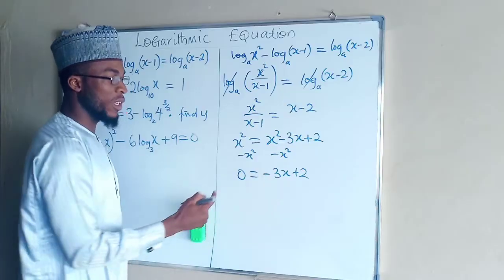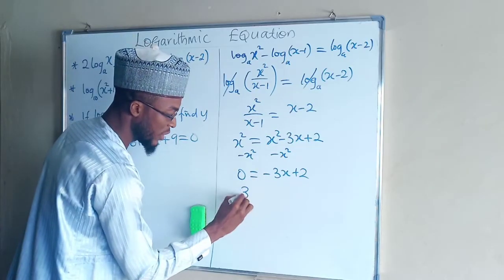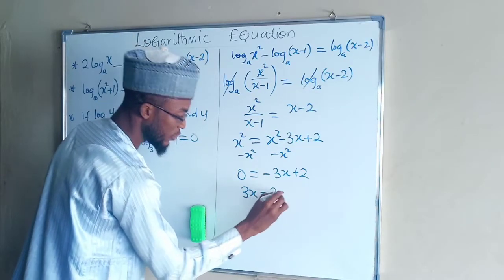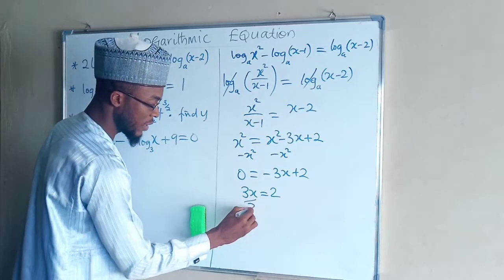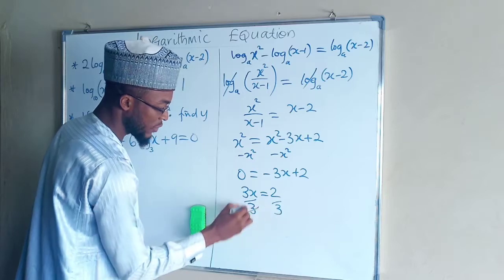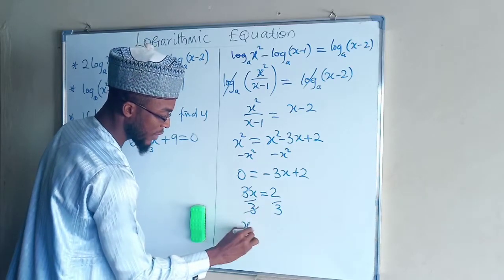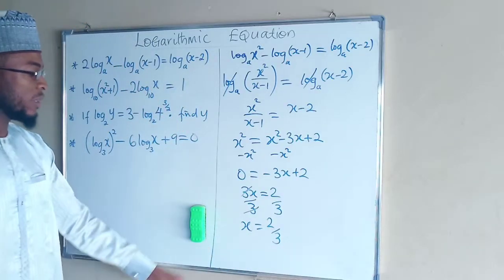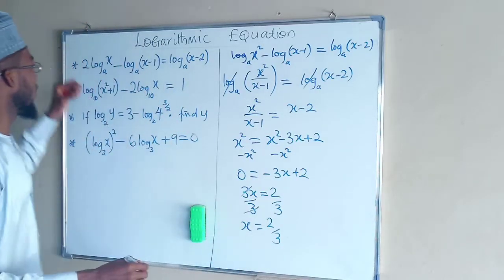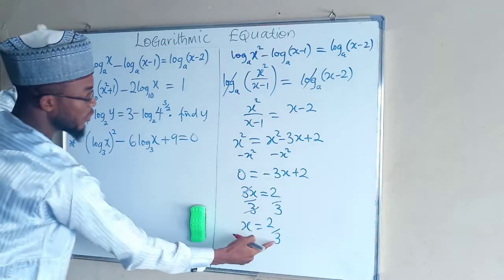By bringing this one to the left hand side we have 3x equals 2. Then to find the value of x you need to divide both sides by 3. So x now equals 2 over 3. Therefore the real value of x in this equation is 2 over 3.